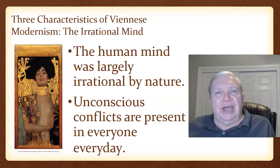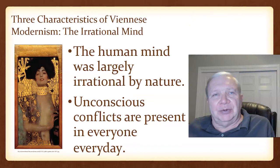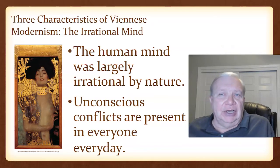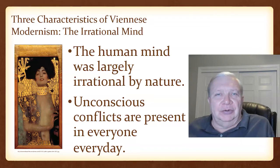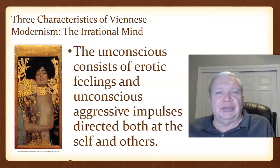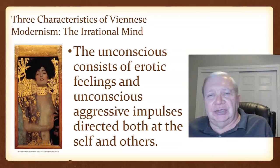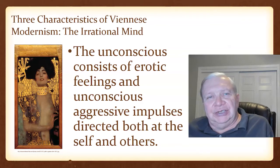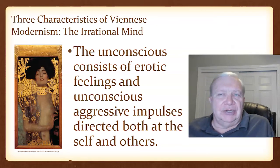Kandel says that Viennese Modernism was marked by three things. First, the mind was seen as an irrational structure, and there were unconscious conflicts present for everyone in everyday life. When you think of Freud, you think of the unconscious and conflicts — so this was a far more common thread than we usually think. The unconscious also consists of erotic feelings and unconscious aggressive impulses, and how they were aimed at both the self and others. This was a common thread running through Vienna, not just Freud's mind.